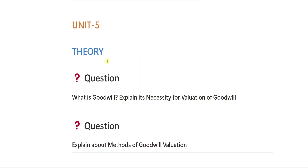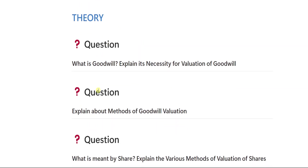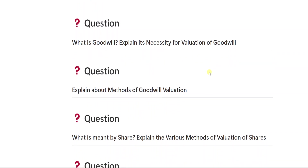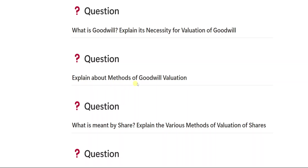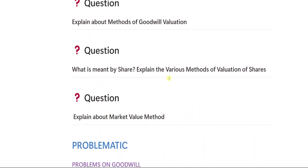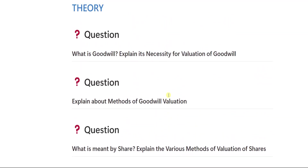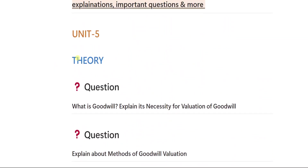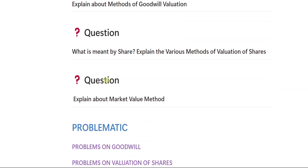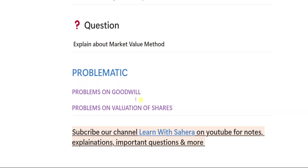In unit number five, the theory important questions are: one is what is goodwill — explain its necessity for valuation of goodwill. Two is explain about methods of goodwill valuation. Three is what is meant by share — explain the various methods of valuation of shares. The last important theory question is: explain about market value method. In the problematic section, you will be seeing problems on goodwill and valuation of shares.